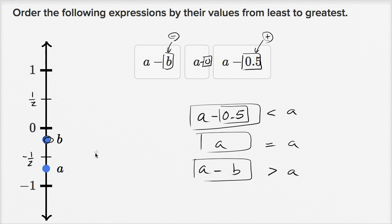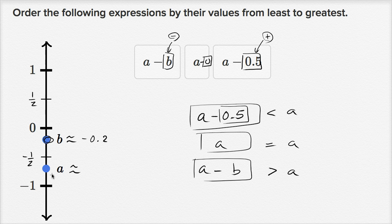Another way you could do it is to estimate the values. B looks like it's about negative 0.2, and a looks like it's approximately negative 0.7. You could verify with the actual values and you'd get the same result.